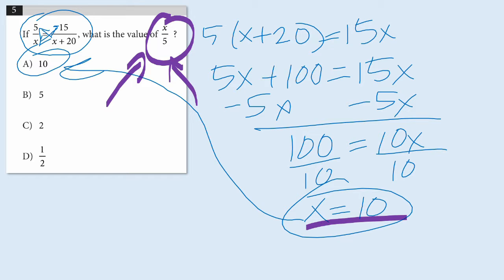So they want to know what is x over 5? Well, if x is equal to 10, then x over 5 is going to be 10 over 5, which is equal to 2. And lo and behold, 2 is the correct answer.